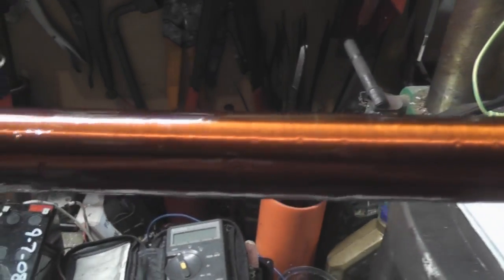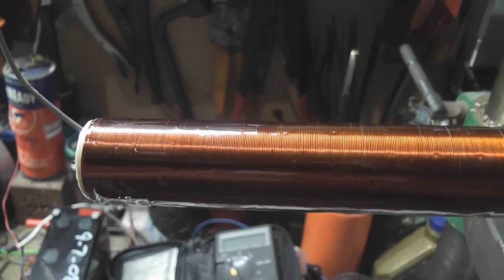I've got the center core from the Tesla transformer now completely varnished and let it dry overnight. That's it.